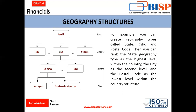These are the geography types which we create, and we have to rank them. If we want world at the top level, we give it level 1, then countries at level 2, regions at level 3, cities at level 4, and postal codes at a lower level. For example, we can create geography types called states, cities, and postal codes, then rank the state geography type as the highest level within a country, city at the second level, and postal code as the lowest level within a country structure.